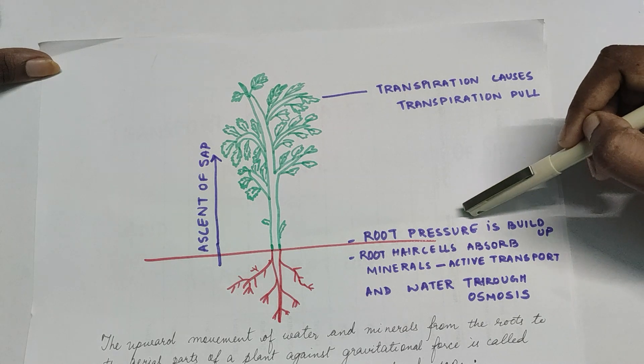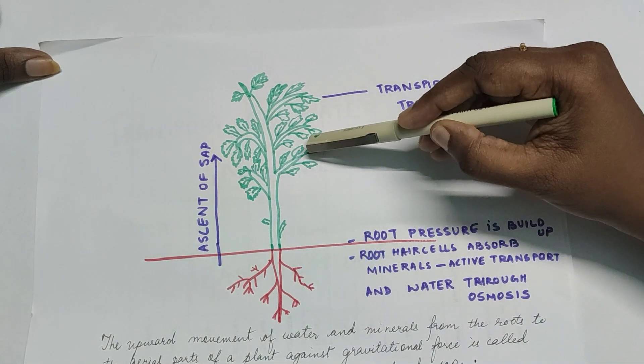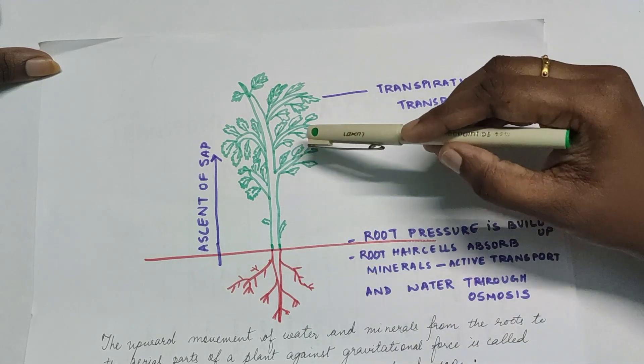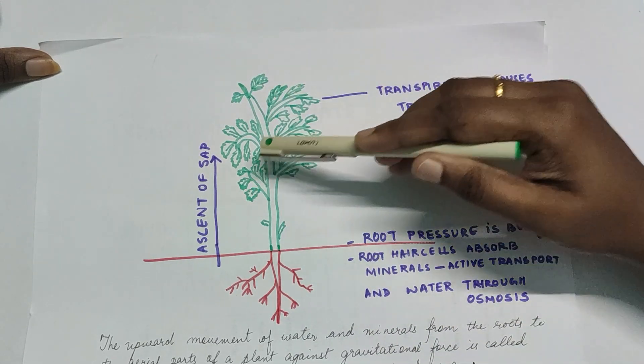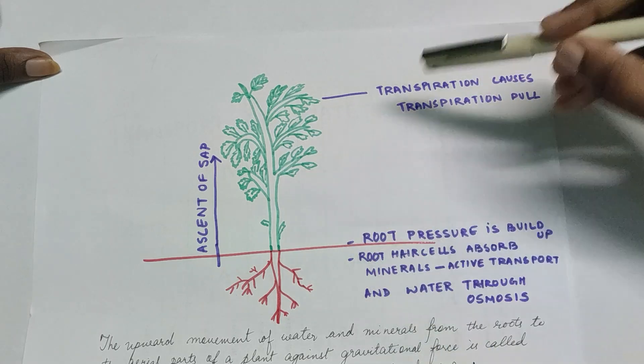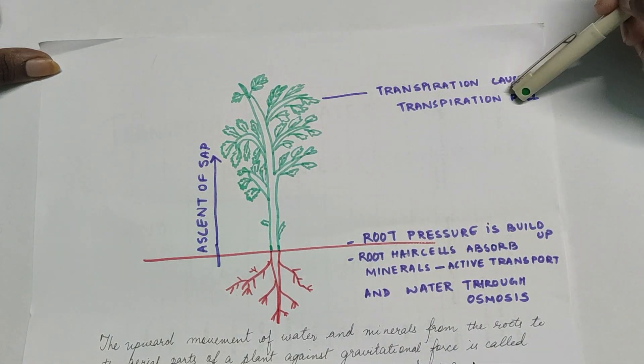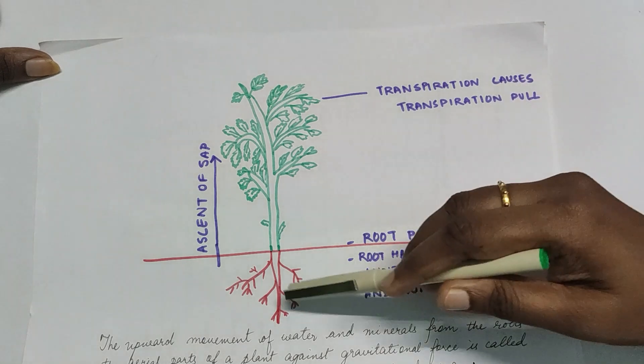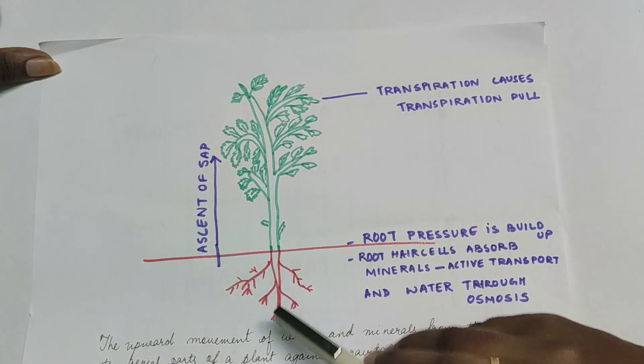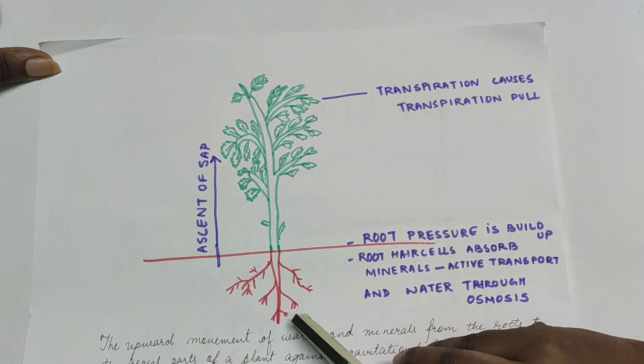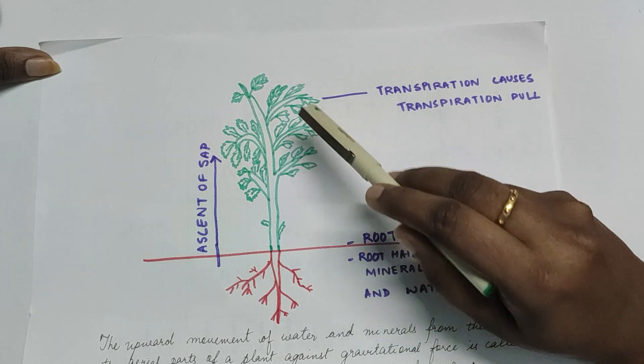And then it will go up as the water will move through the xylem, then it will go to the leaves in different parts. This will also happen due to transpiration which causes the transpiration pull. The water and minerals which are absorbed by the roots are conducted up through xylem and it will reach all the parts.